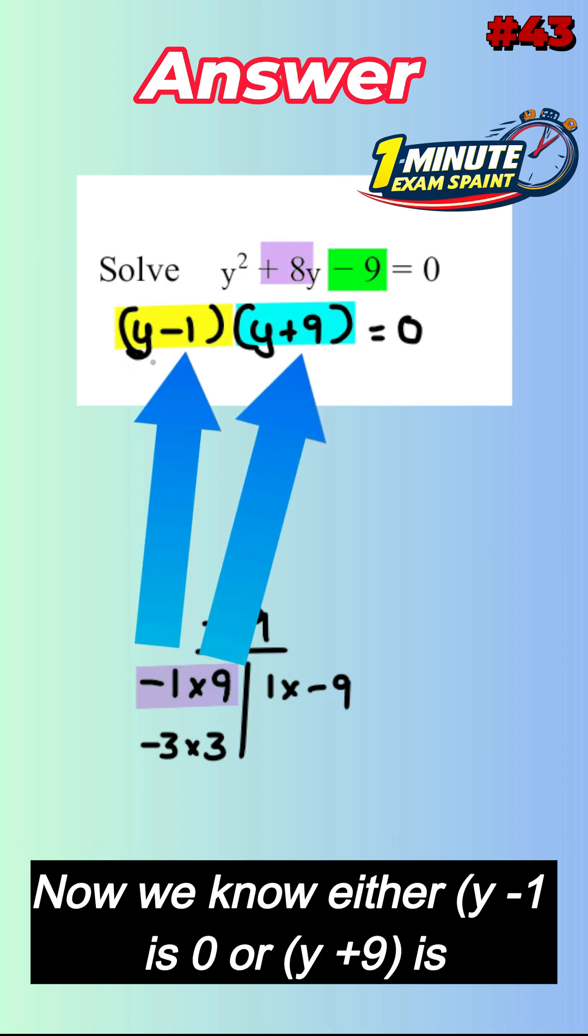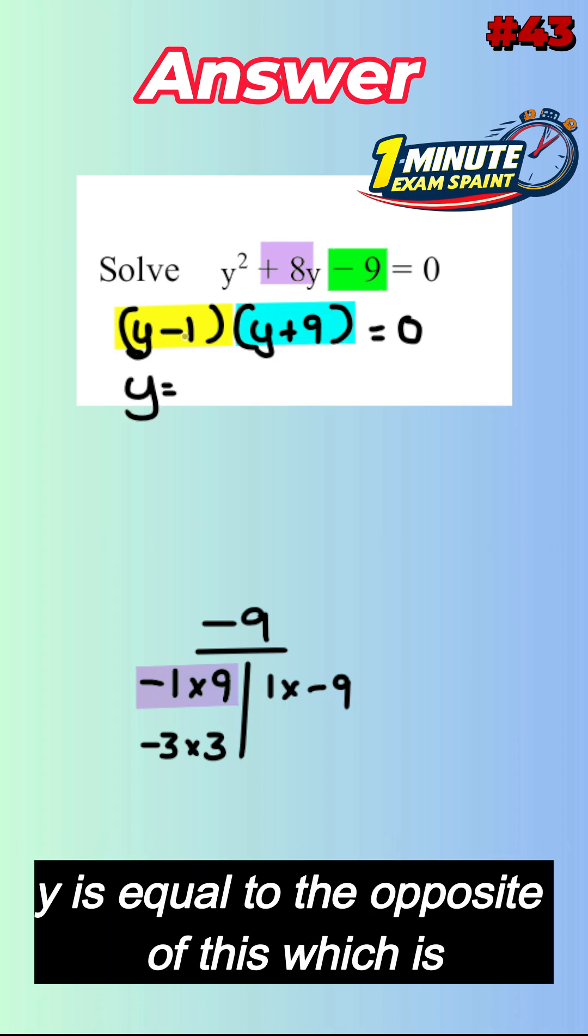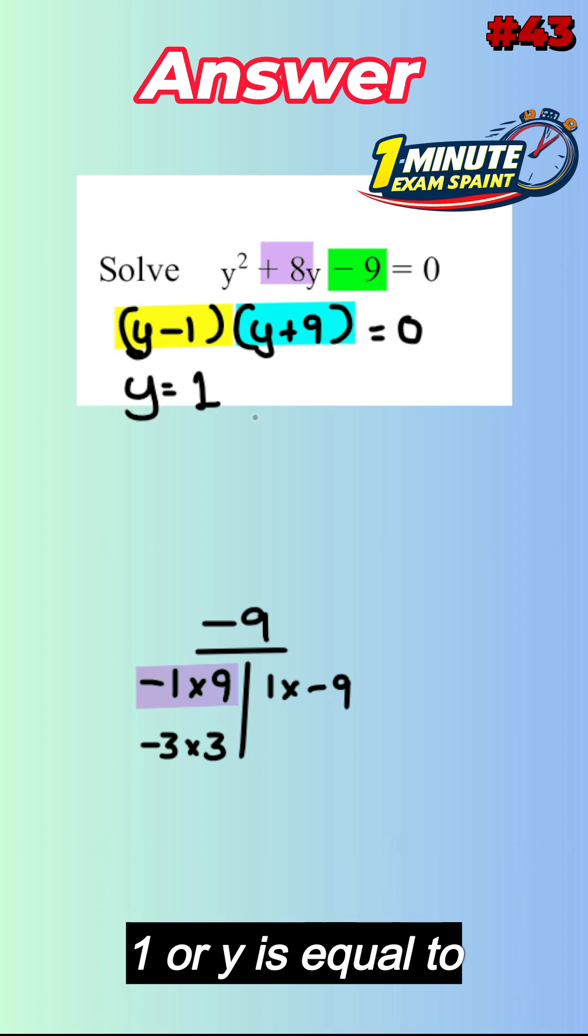Now we know either y minus 1 is 0 or y add 9 is equal to 0. y is equal to the opposite of this, which is 1, or y is equal to negative 9. Done.